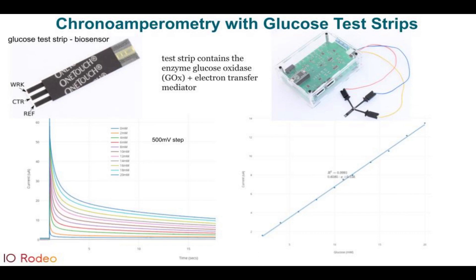There are other types, such as coulometric test strips, which work a little differently — in that case you might use the integration of the current signal as opposed to sampling at a particular time point after the pulse. We're not suggesting you replace your glucose blood monitor with a Rodeostat; however, these test strips provide a nice introduction into how biosensors work and how you might use a Rodeostat to develop and work on them.